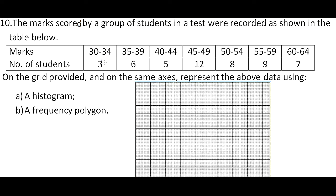35 to 39 there were 6, up to 60 to 64 there were 7. Then we have the frequency or the number of students, 3 up to 7. The lowest is 3, the highest is 12. On the grid provided, and on the same axis, represent the above data using a histogram.